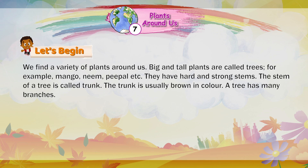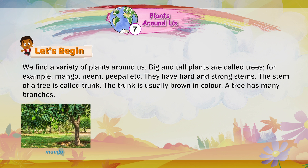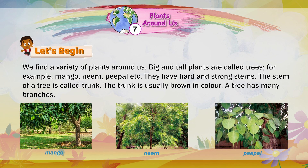We find a variety of plants around us. Big and tall plants are called trees. For example, mango, neem, peepal, etc. They have hard and strong stems. The stem of a tree is called a trunk. The trunk is usually brown in colour.